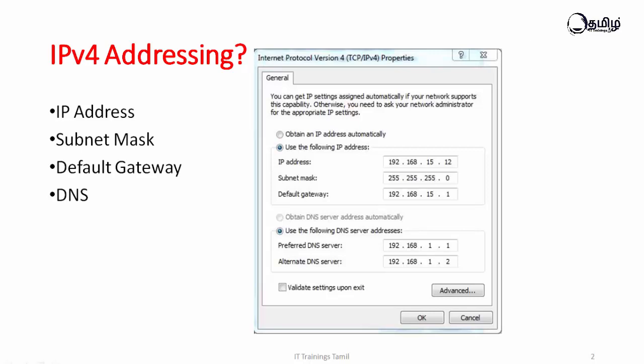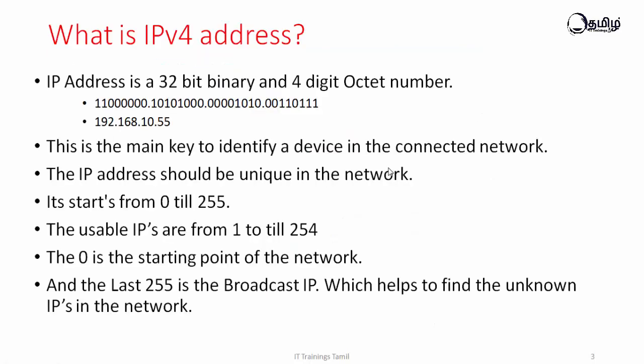The first field is IP address. What is an IP address? It's a 32-bit binary with a 4-digit octet number. If you want to interact with the computer, it's 0s and 1s. For example, if a function is active it's 1, and if not it's 0. This binary is 4-digit. It's just a reference for humans. The octet number is the normal human-readable number, while the binary is the computer-readable number.